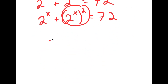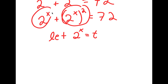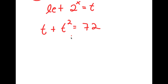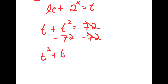From here, I'm going to let 2 to the power of x equal the variable t. Substituting t in for 2 to the power of x, I get t plus t squared is equal to 72. That's the reason I rewrote it that way — now I have two of the same variable. Subtracting 72 from both sides gives t squared plus t minus 72 equals 0.